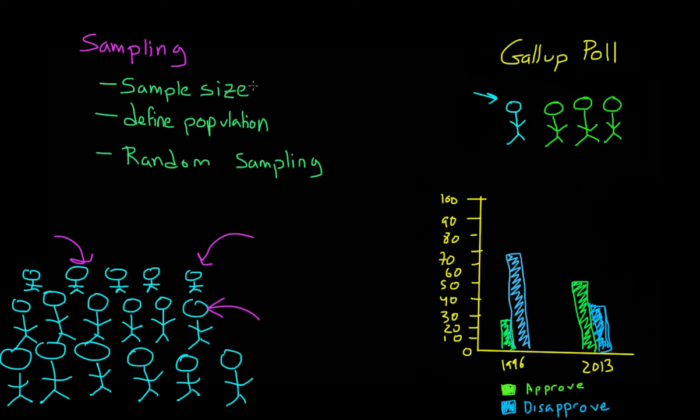So if we have a large sample size and we've been careful to sample from the population that we're actually interested in looking at, and if we've been sure that we've sampled randomly from that population, then our survey data tends to be more reliable.